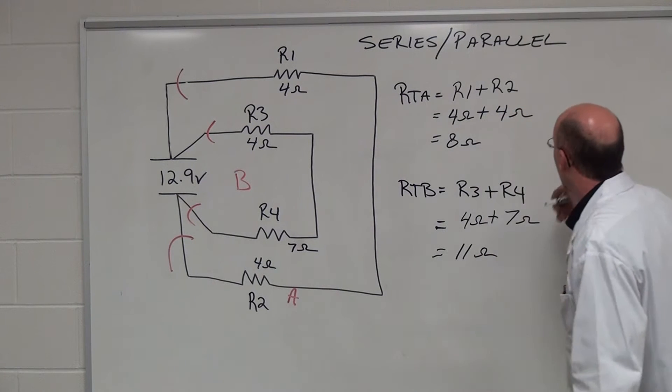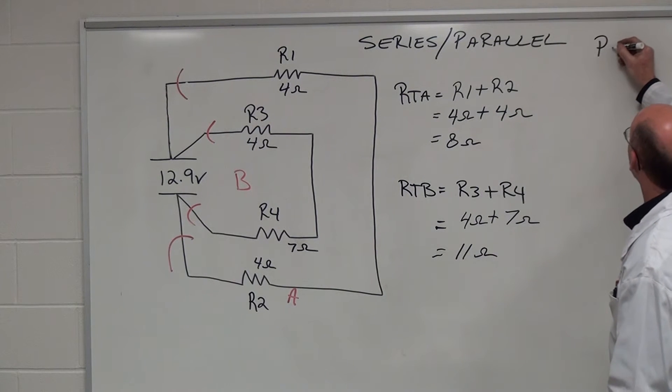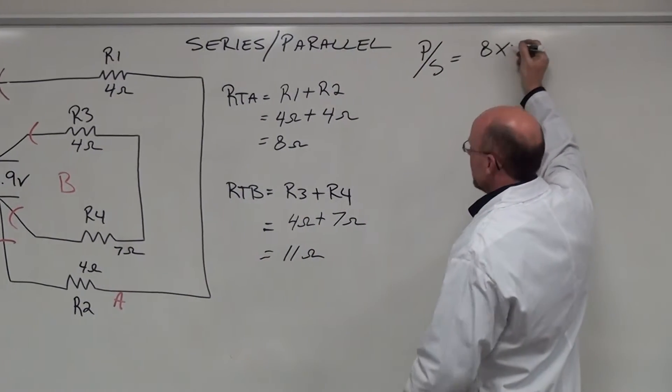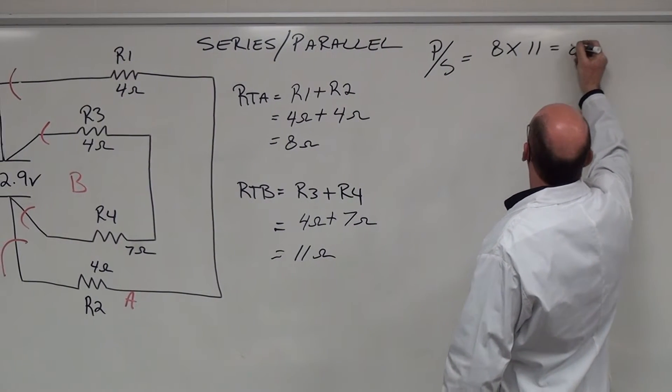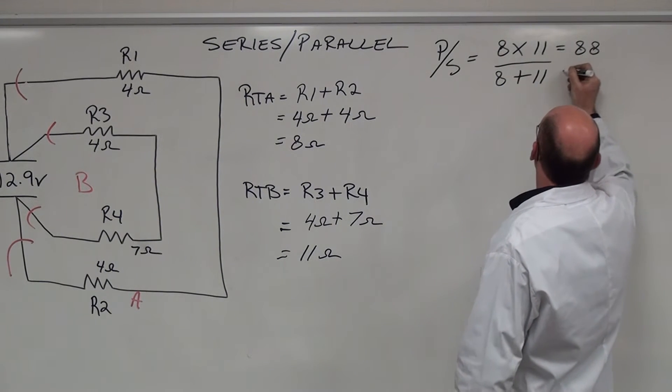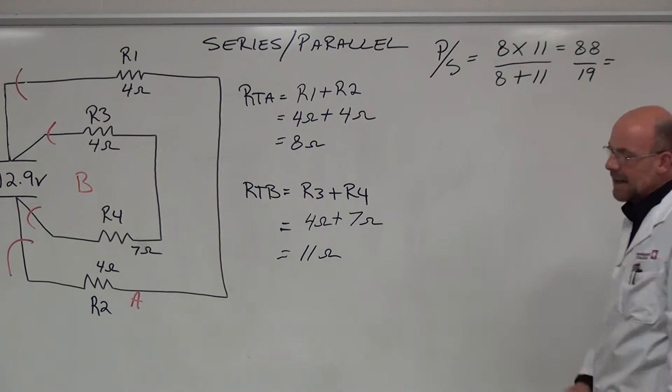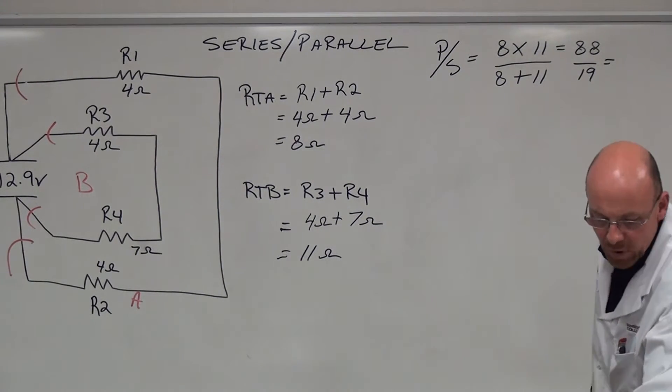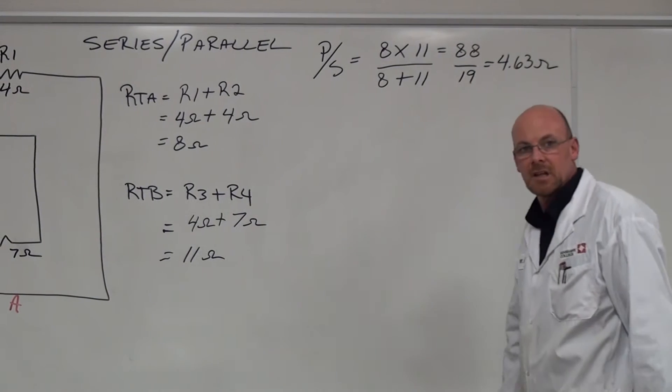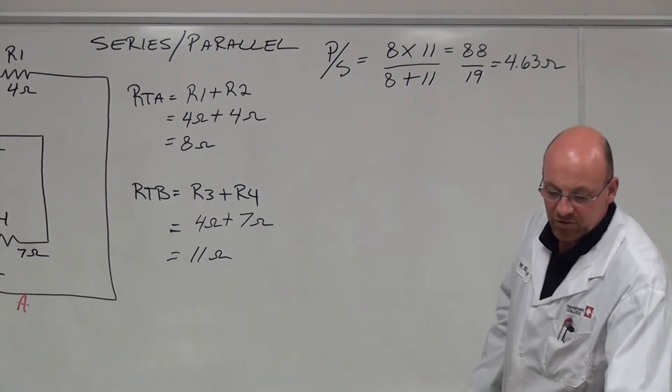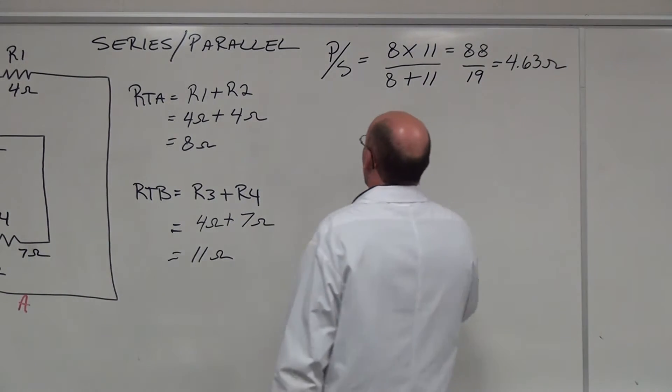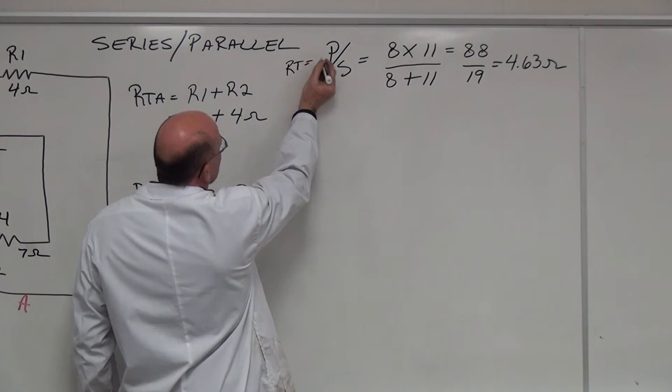So if we go back over here and we take a look at product over sum. If we take 8 ohms times 11 ohms equaling 88, and then 8 ohms plus 11 ohms equaling 19, and we divide 88 by 19, we end up with 4.63 ohms. So that's using the product over sum method. And remember the value that we have right here. Now we'll take a look at the one over formula. So RT equals product over sum.